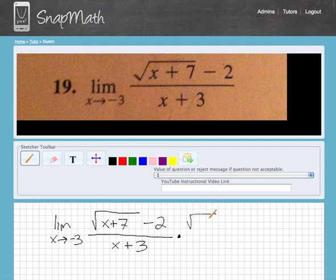So the conjugate of the top is square root of x plus 7 plus 2. And whenever you do the top, you've got to do the bottom, because multiplying by this quantity is like multiplying by 1, which means you're not really changing the problem.